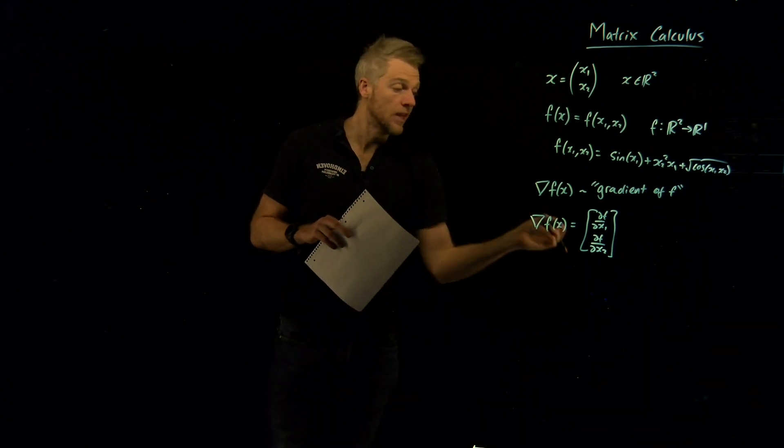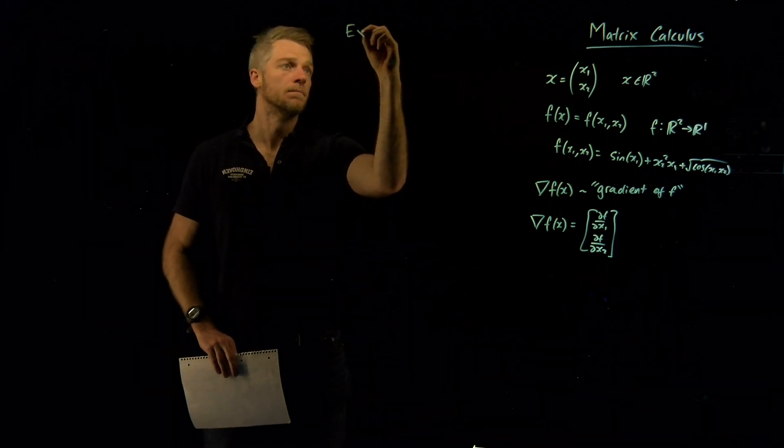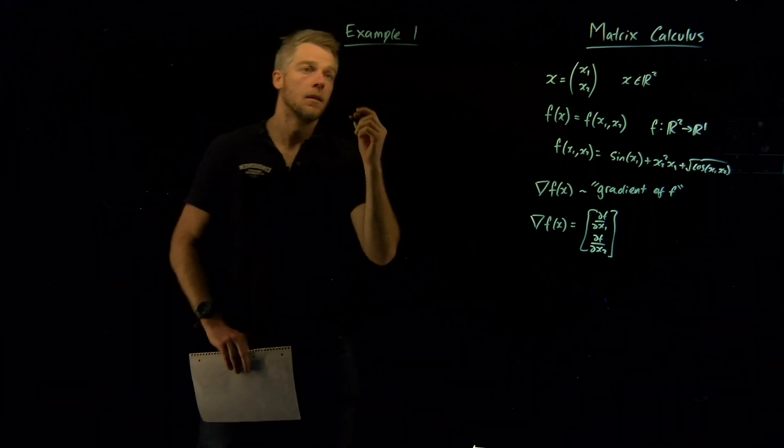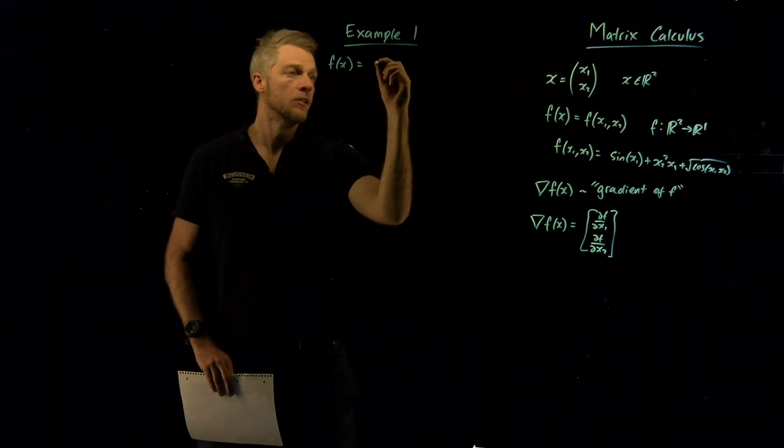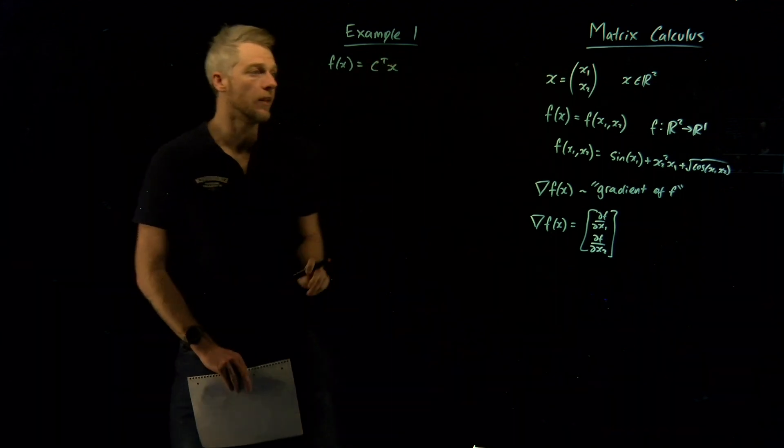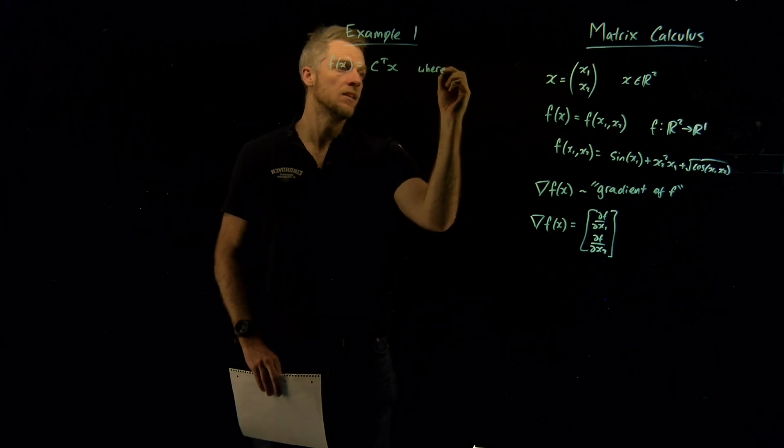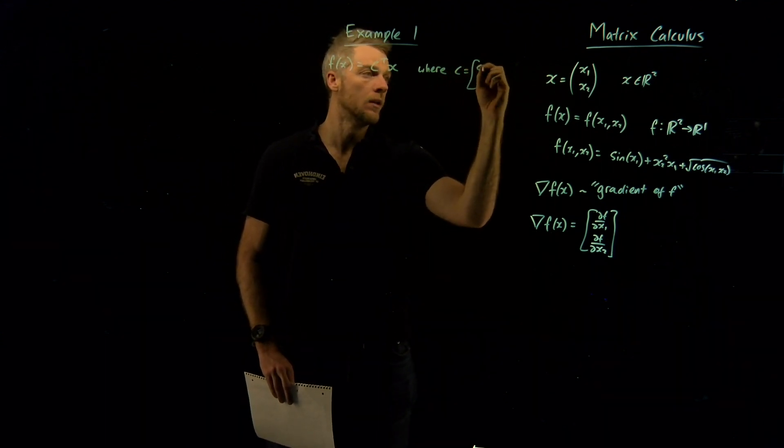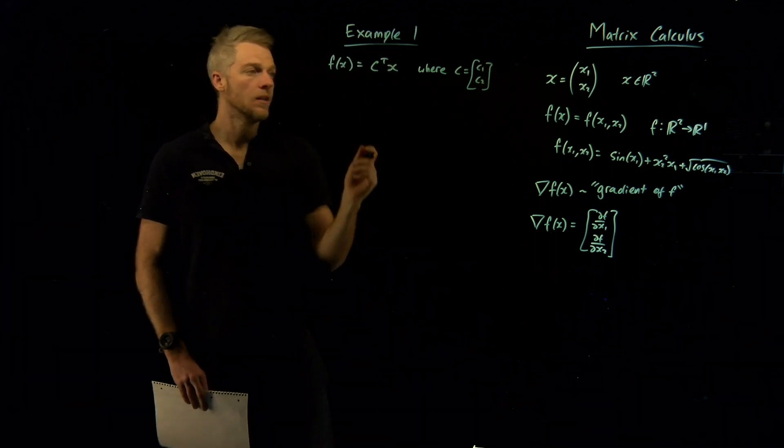So let's cover a few examples. Let's cover an example. Let's do example one. Let's say that we have f of x given by c transpose x like this, where this c is just a constant vector. Let's call it c1, c2, where c1 and c2 are constants.